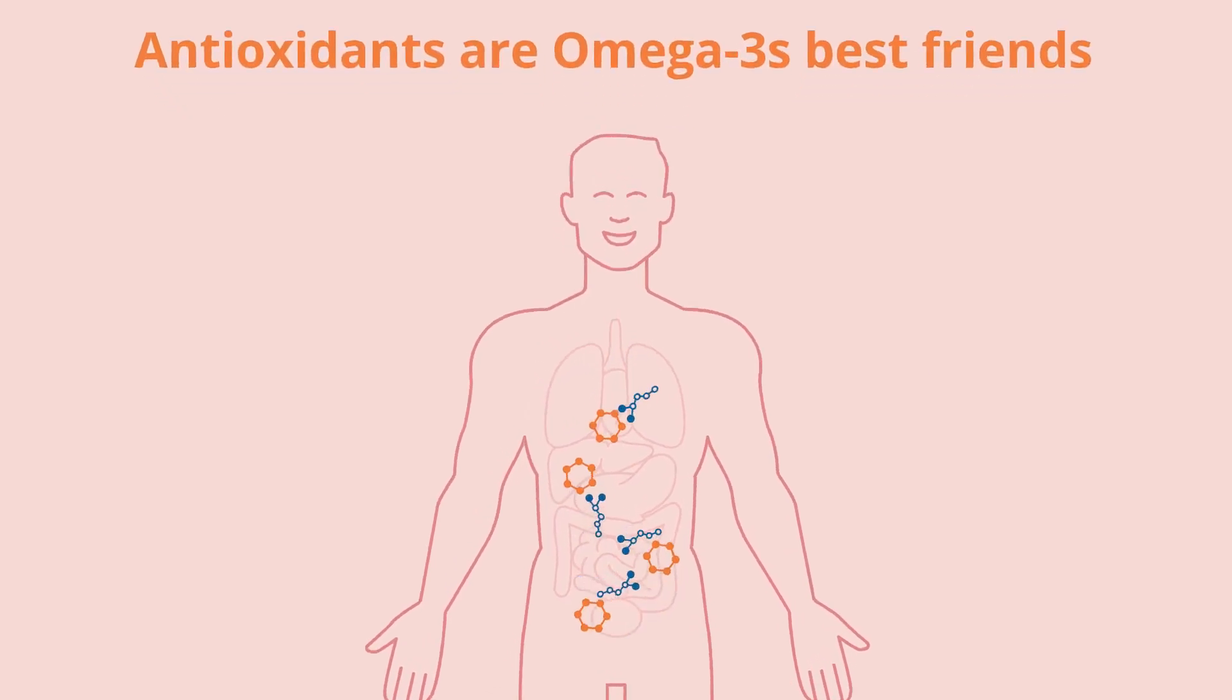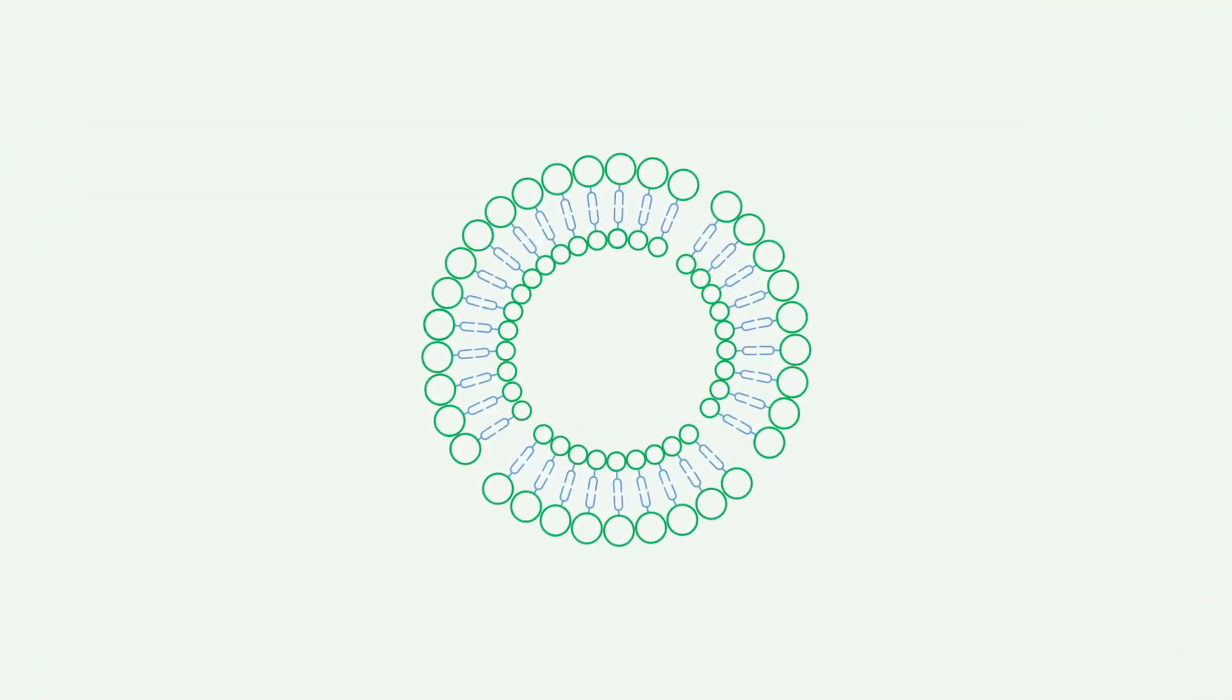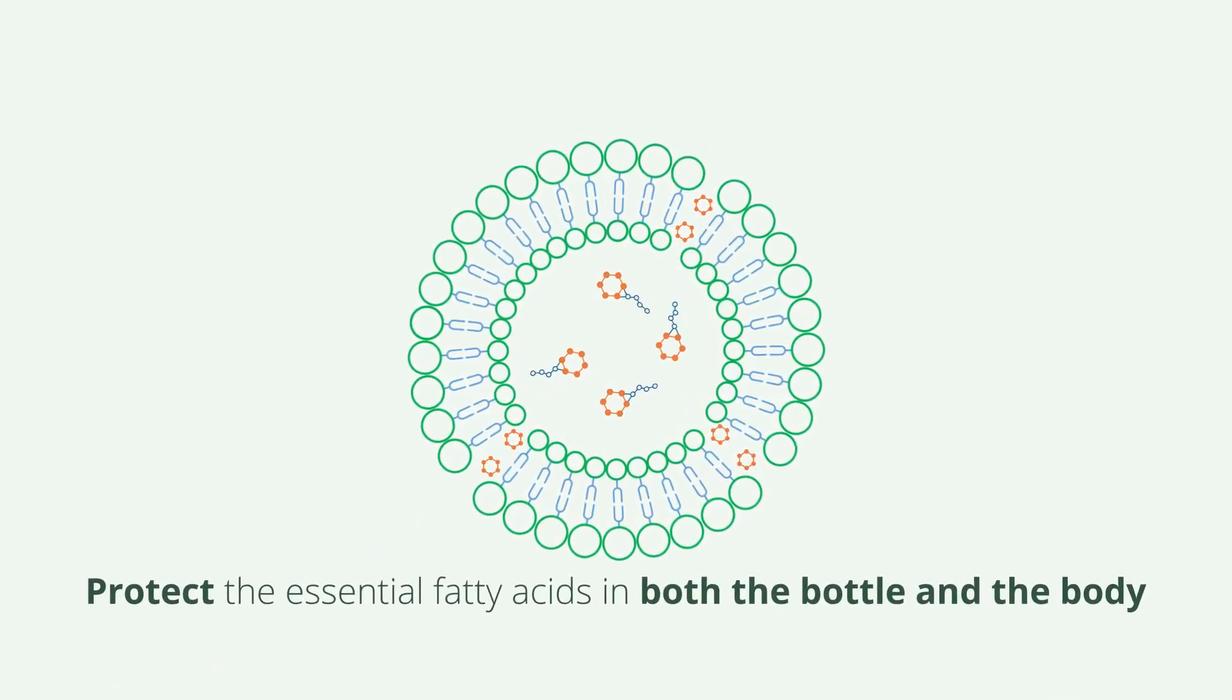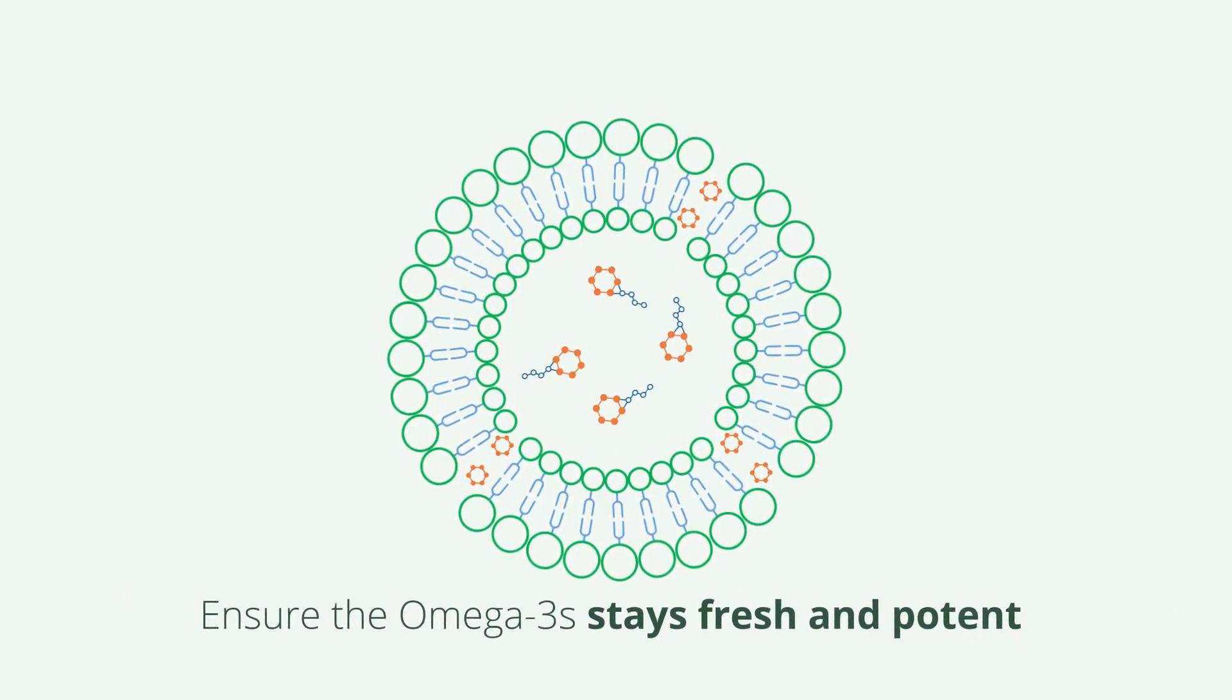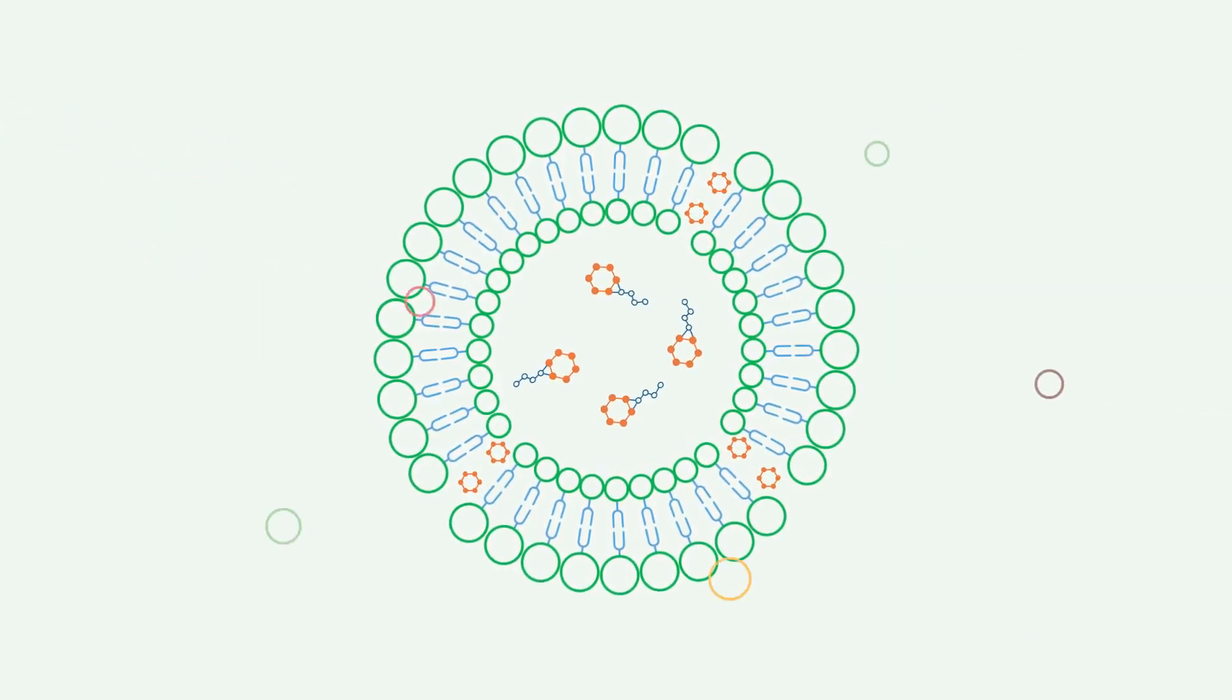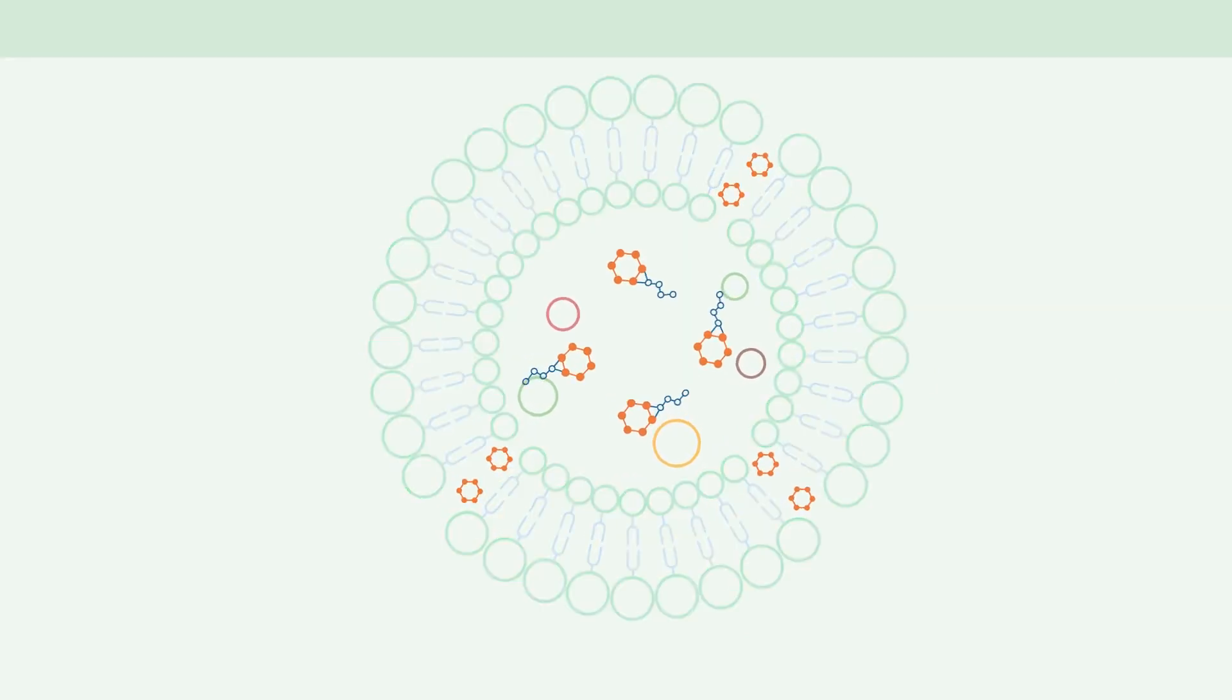Antioxidants are omega-3's best friends. Here's a close-up look of a cell in our body. Antioxidants protect the essential fatty acids in both the bottle and the body. They ensure the omega-3s stay fresh and potent, and they keep the cell membranes flexible to absorb nutrients. But not just any antioxidants will get the job done.